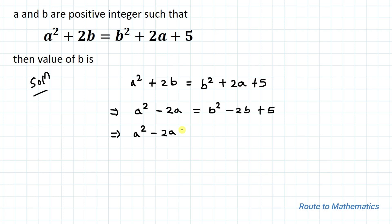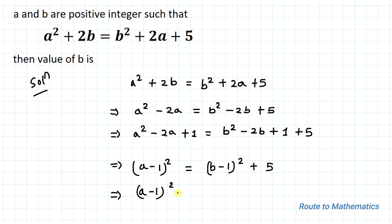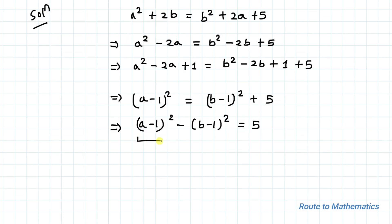This implies a² - 2a. In order to apply the algebraic identity of (a - b)², let's add plus 1 on the left hand side and similarly b² - 2b + 1 on the right hand side. So we have a² - 2a + 1, which we can write as (a - 1)² = (b - 1)² + 5.